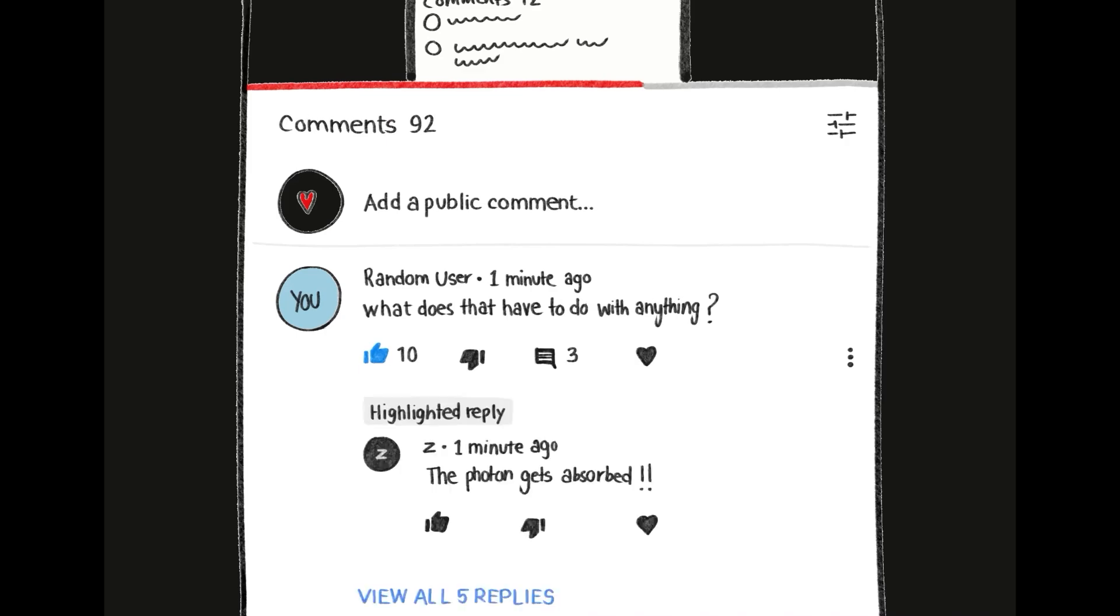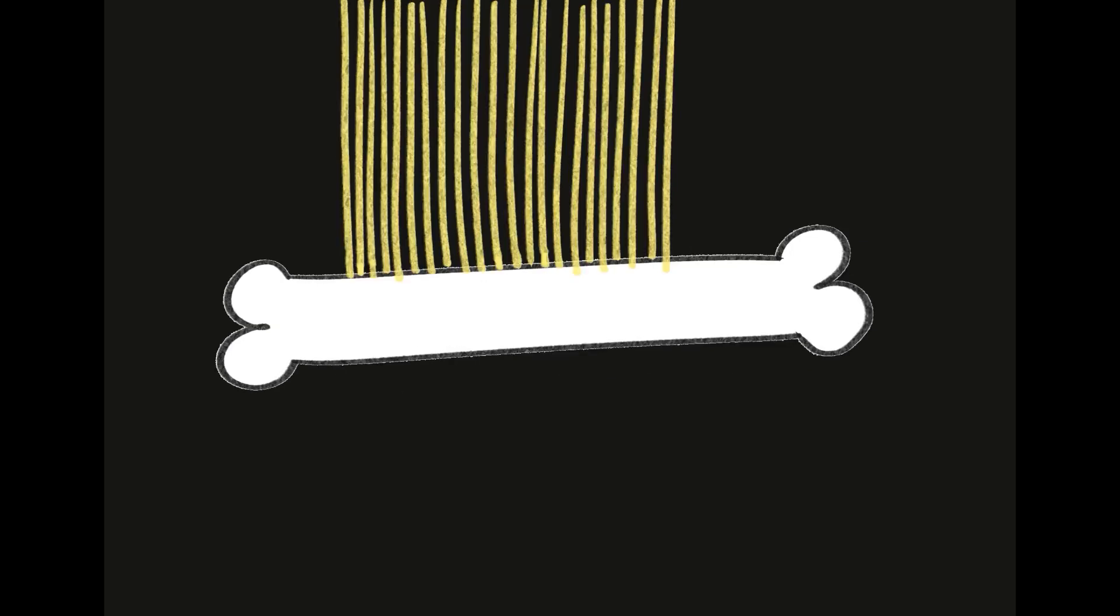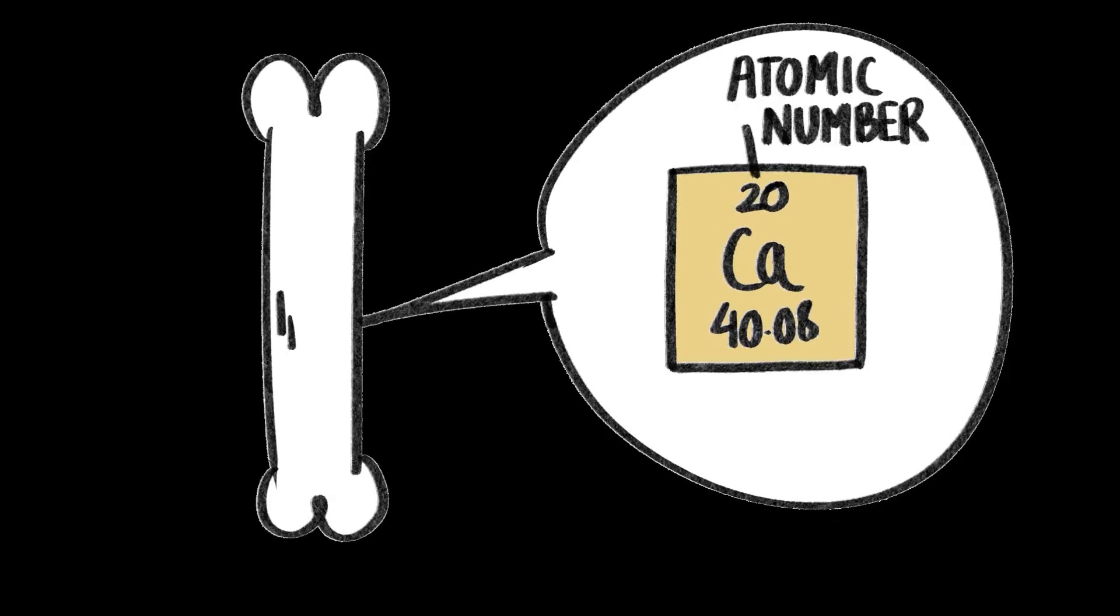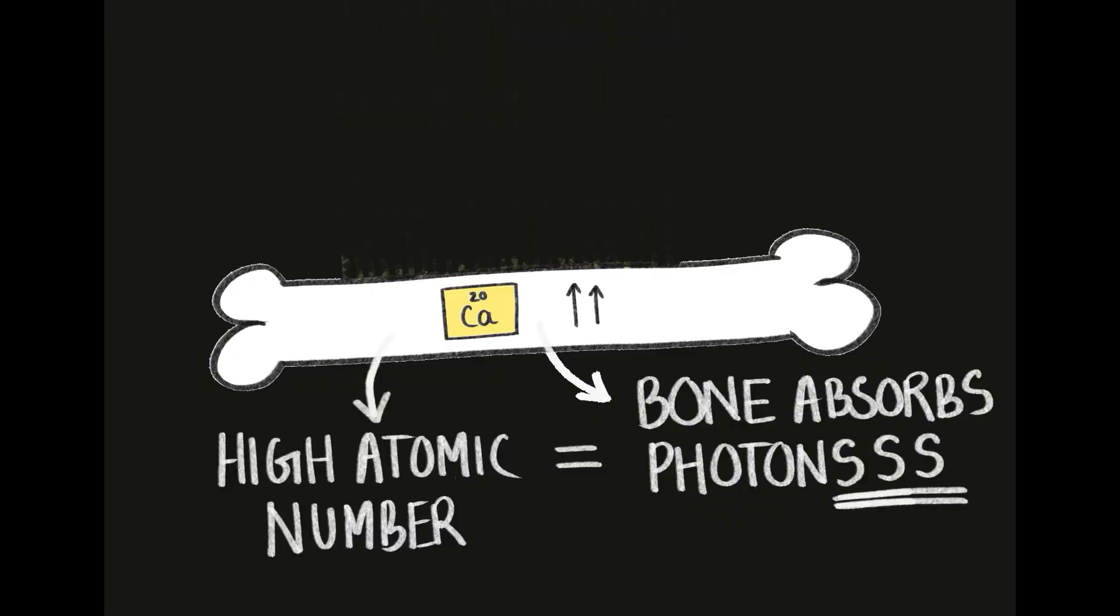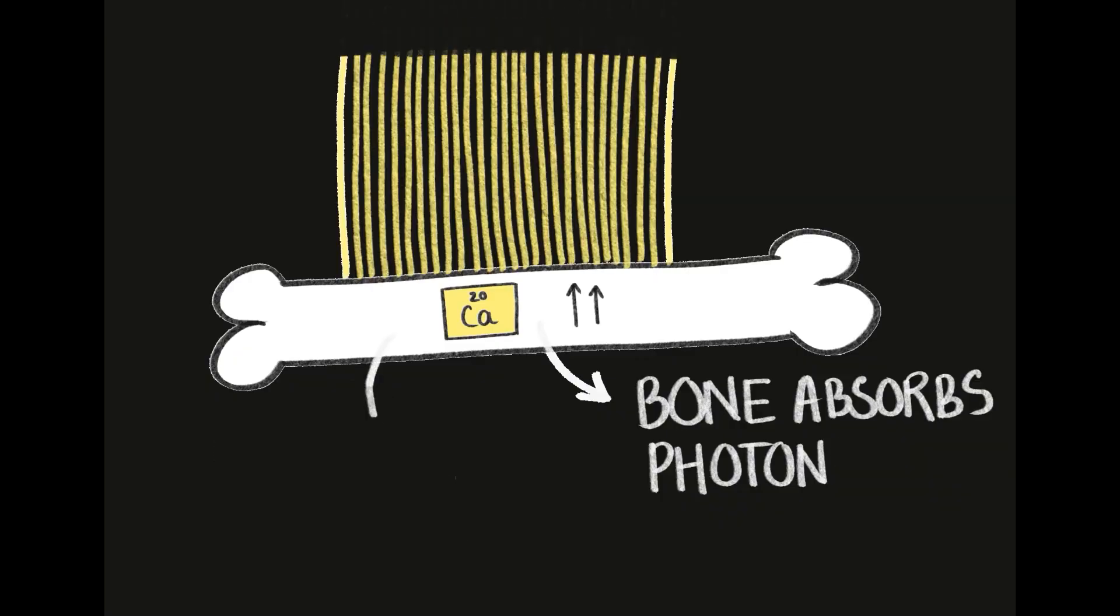The key here, the photon gets completely absorbed, meaning the x-rays don't pass through the bones. This occurs because the atomic number of bones is pretty high, and the higher the atomic number, the more photons get absorbed.